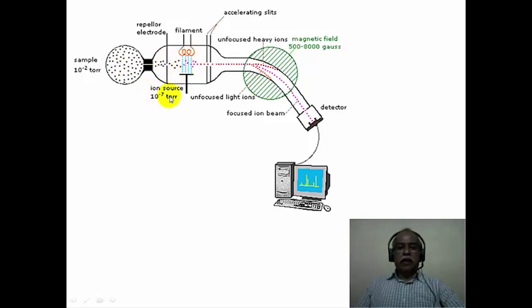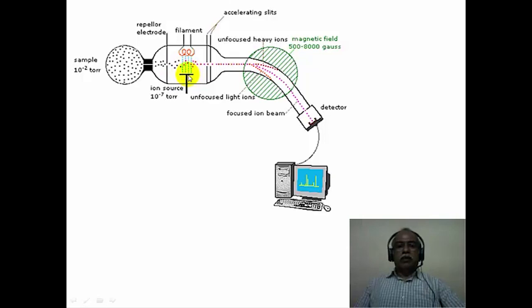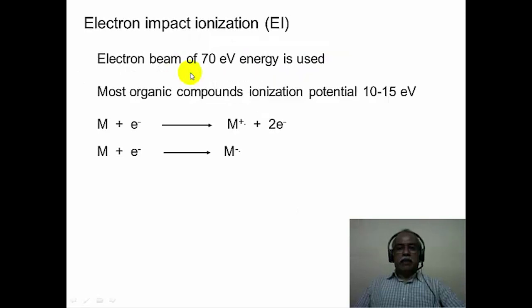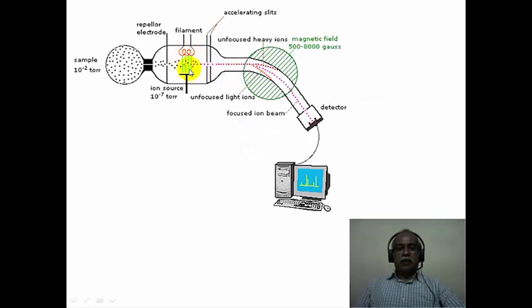The ionization chamber is maintained at a much higher vacuum of 10 to the power minus 7 torr or 10 to the power minus 6 torr, and essentially consists of a cathode ray tube kind of arrangement with two electrodes. One of them is a heated filament which produces high energy electrons that get attracted to the negative electrode. The sample passes through a slit through this electrode and is brought under the stream of high energy electrons, and this is the process by which ionization takes place.